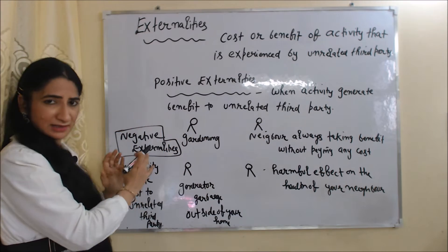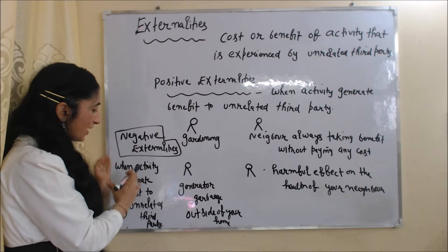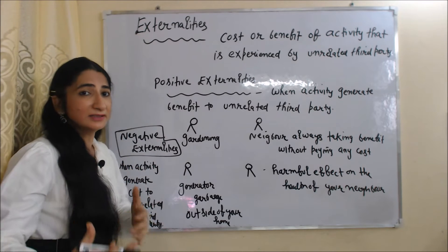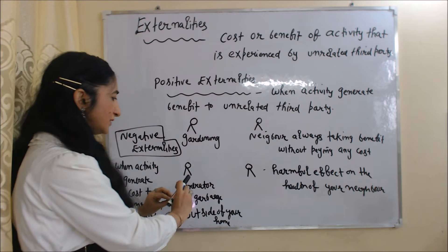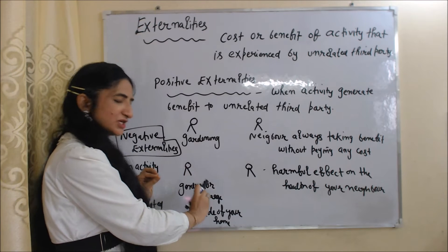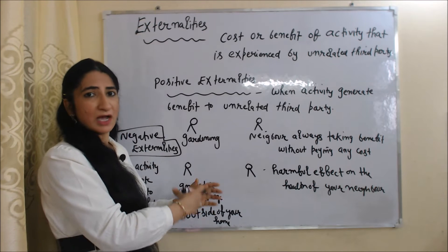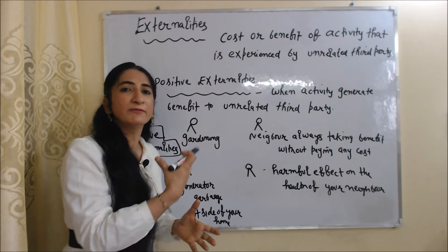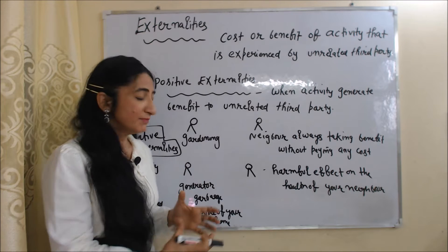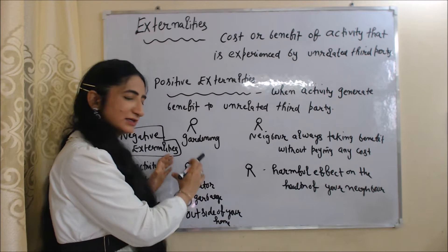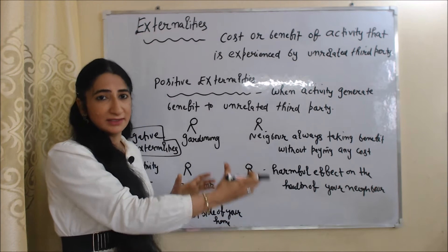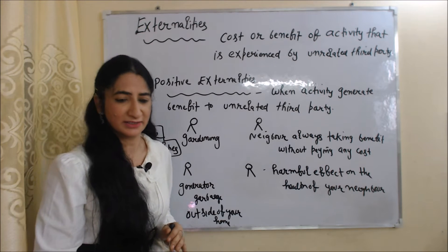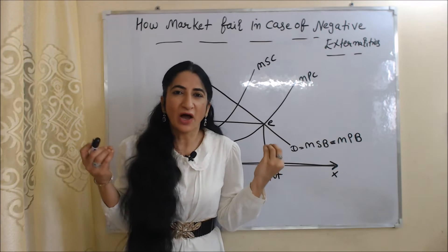On the other hand, negative externalities means when an activity generates a cost to an unrelated third party. For example, you keep a generator or garbage outside your home and it is creating a harmful effect on the health of your neighbor — your activity is giving loss to an unrelated third party. That is called negative externalities.